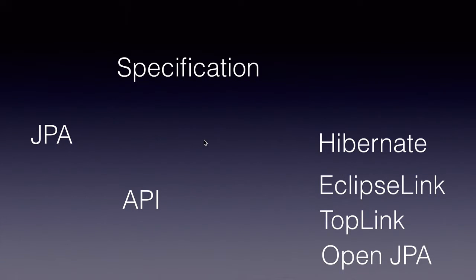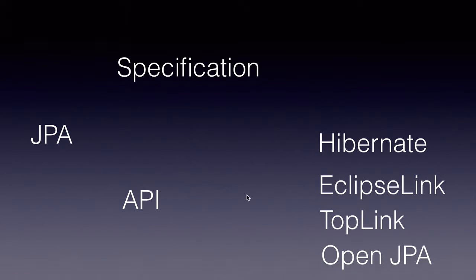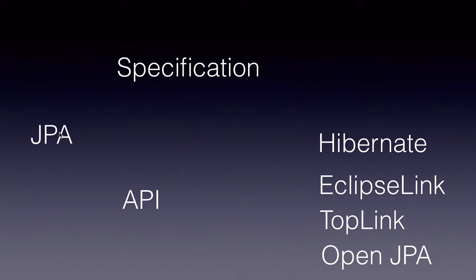But in the open source world, a lot of times standards work the reverse way. Hibernate was popular long ago, even before JPA was thought of, and several developers had already learned the Hibernate API, which is proprietary to Hibernate. That said, JPA has borrowed a lot of things from Hibernate.